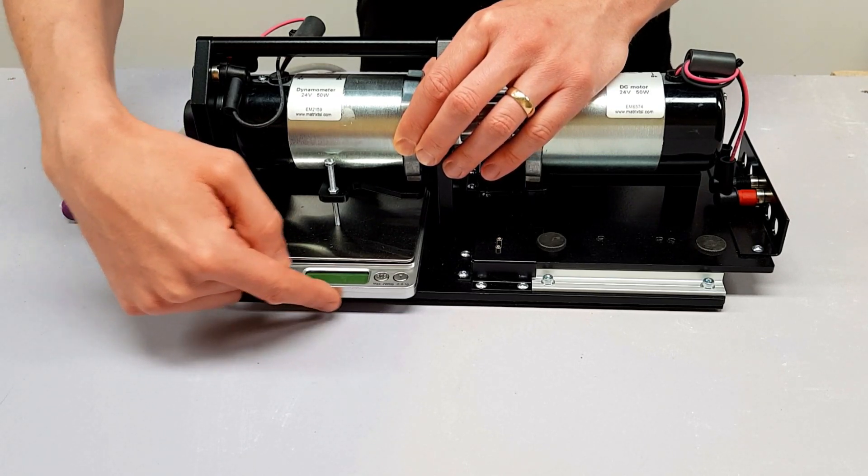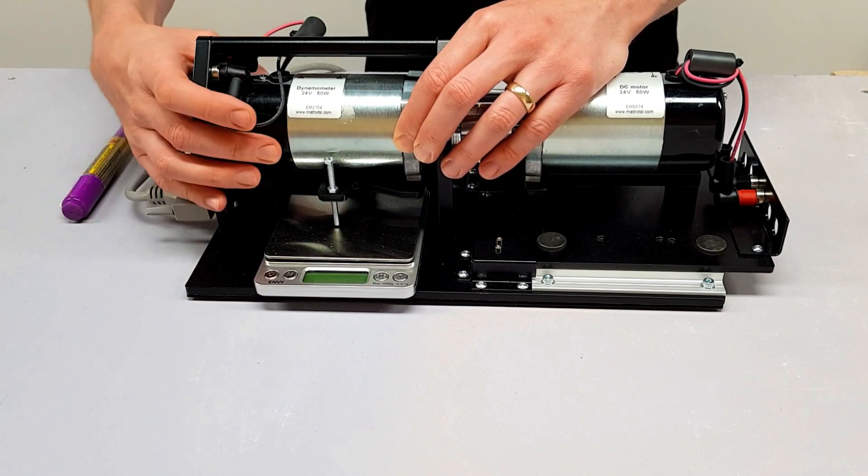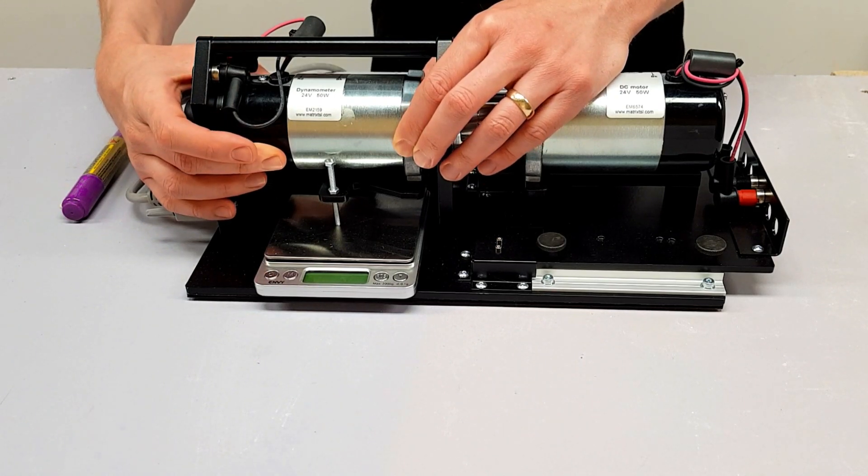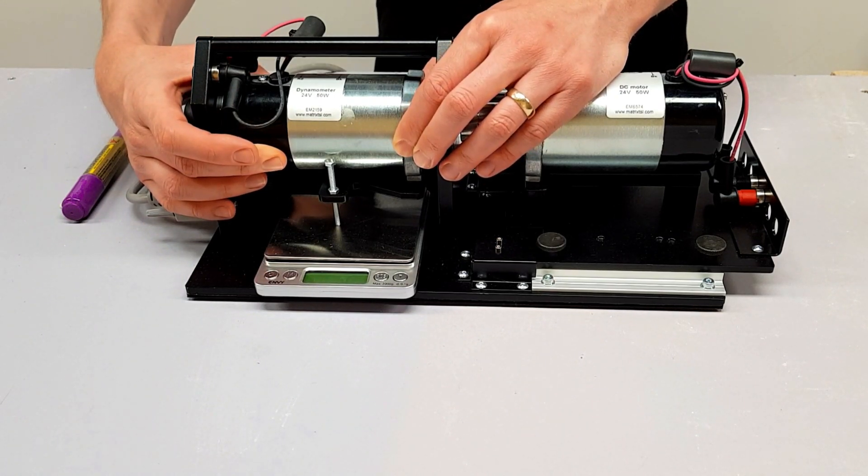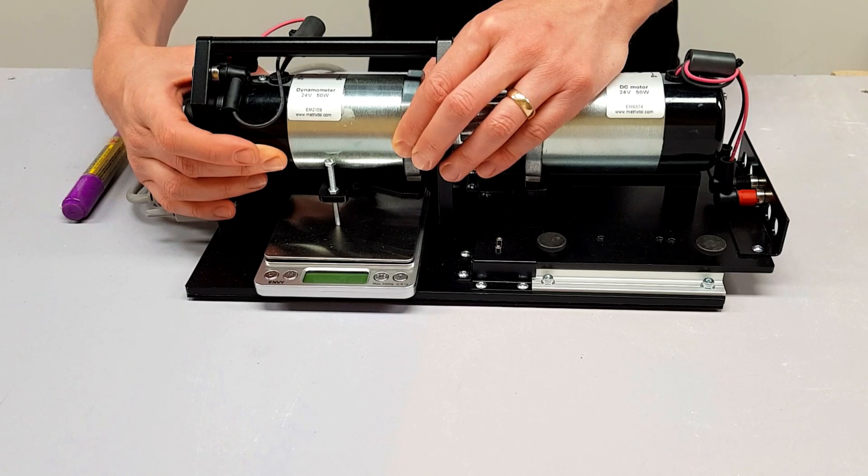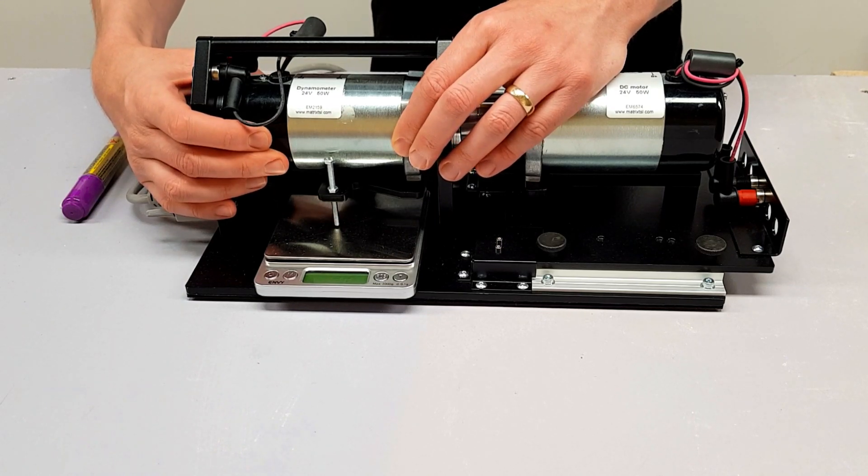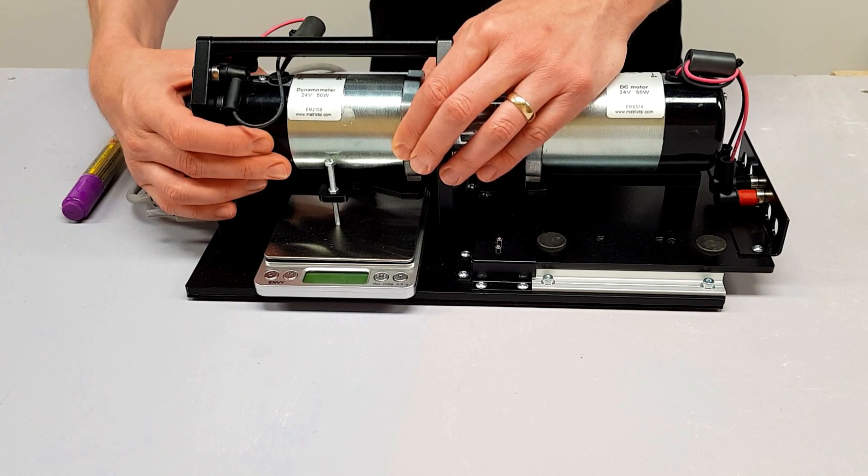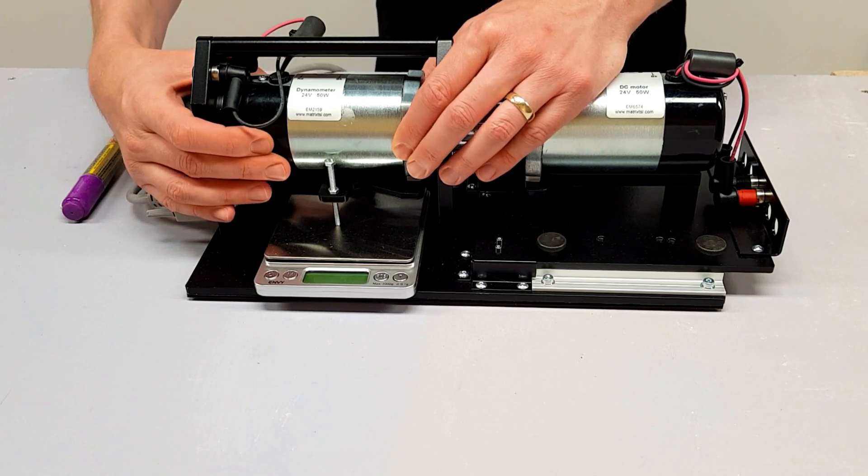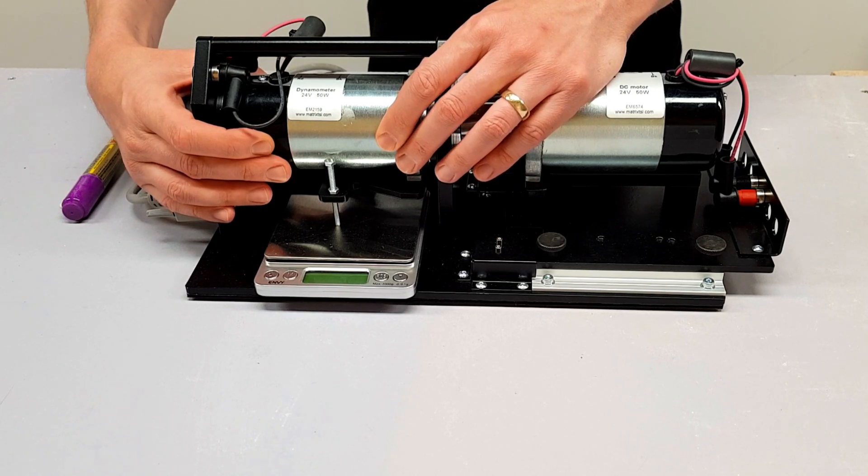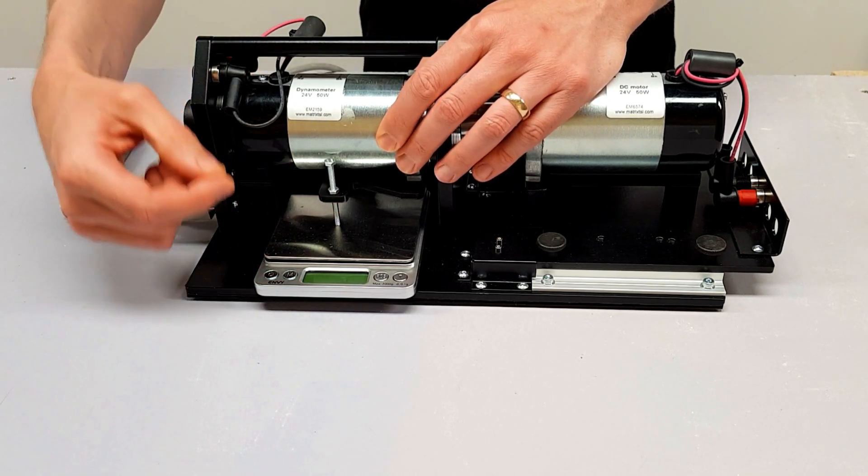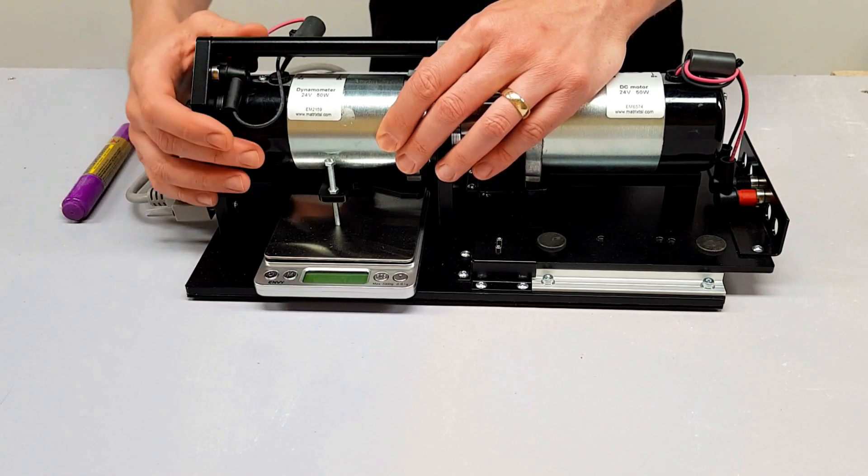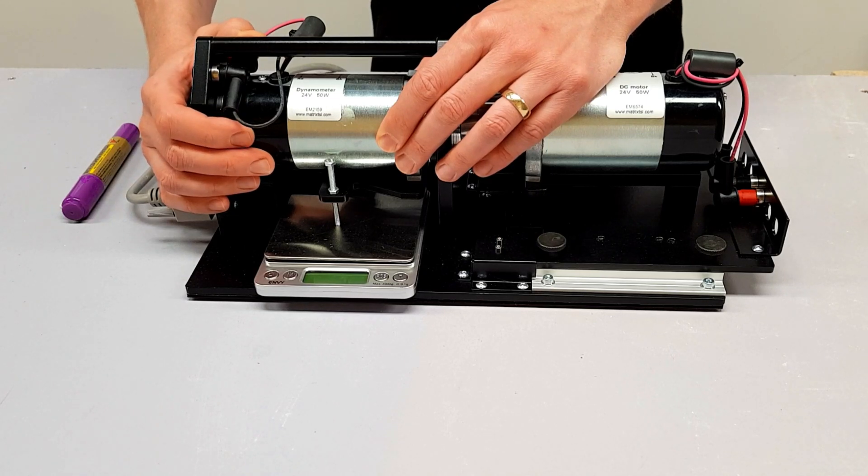Now, what reading is that going to give us? Is it going to give us the force that this motor is turning with or will it give us something else? Well, actually, it's going to give us something else. It's not going to tell us the force that this is being turned with. We actually need a different concept now. So we really need to get our heads wrapped around the difference between mass and weight. And we'll look at that in the next video.